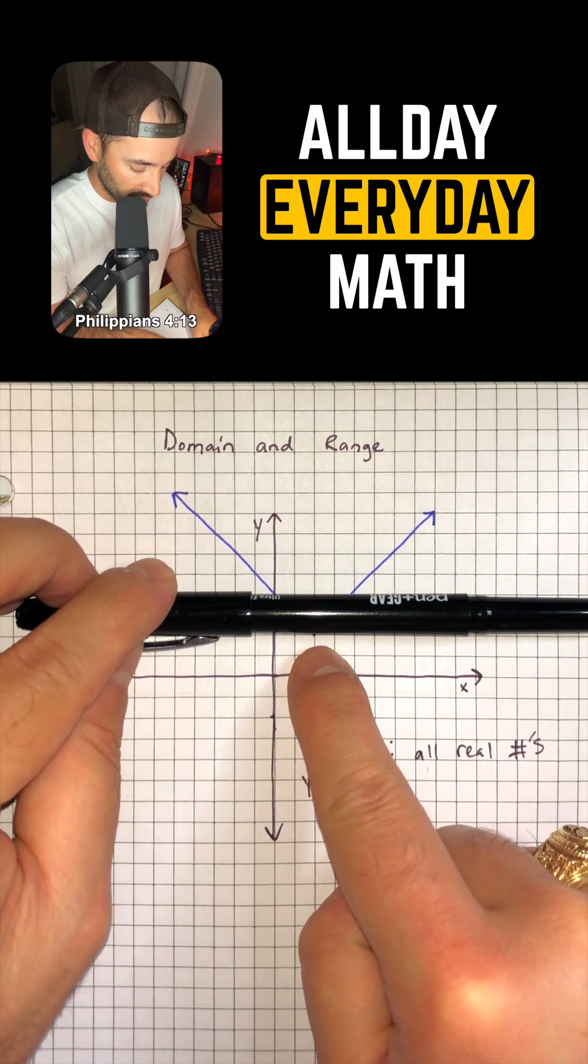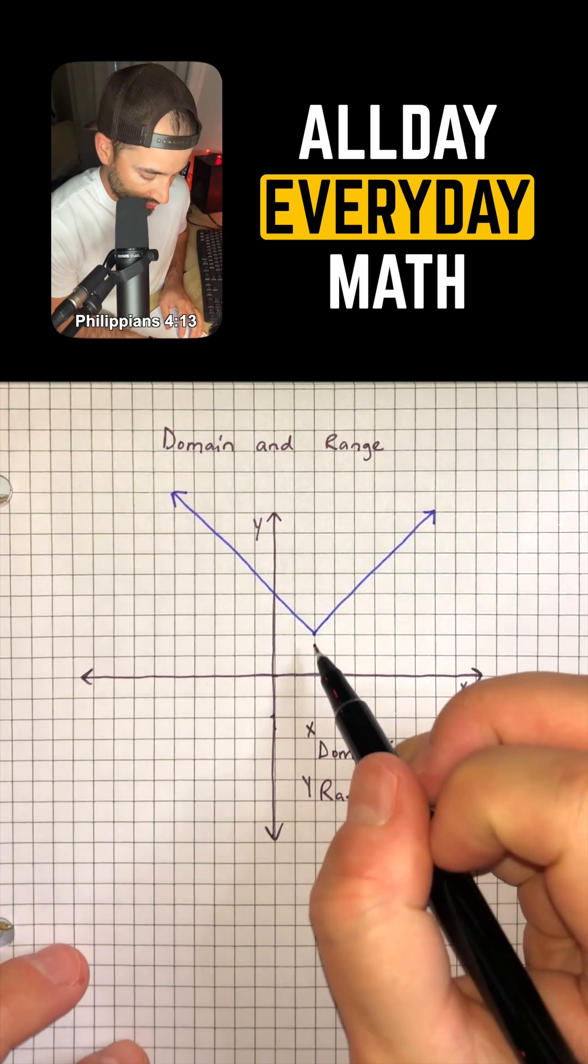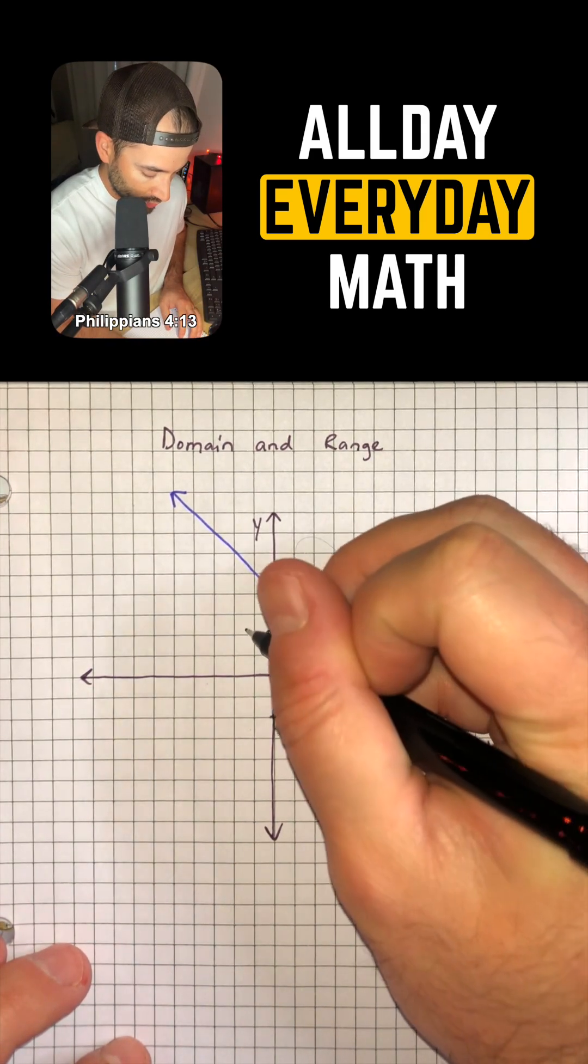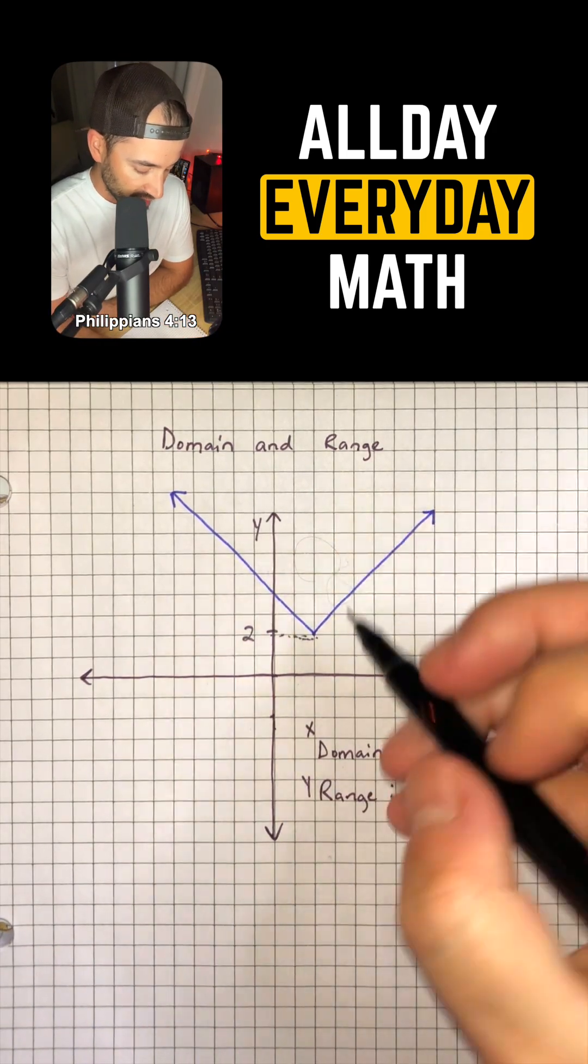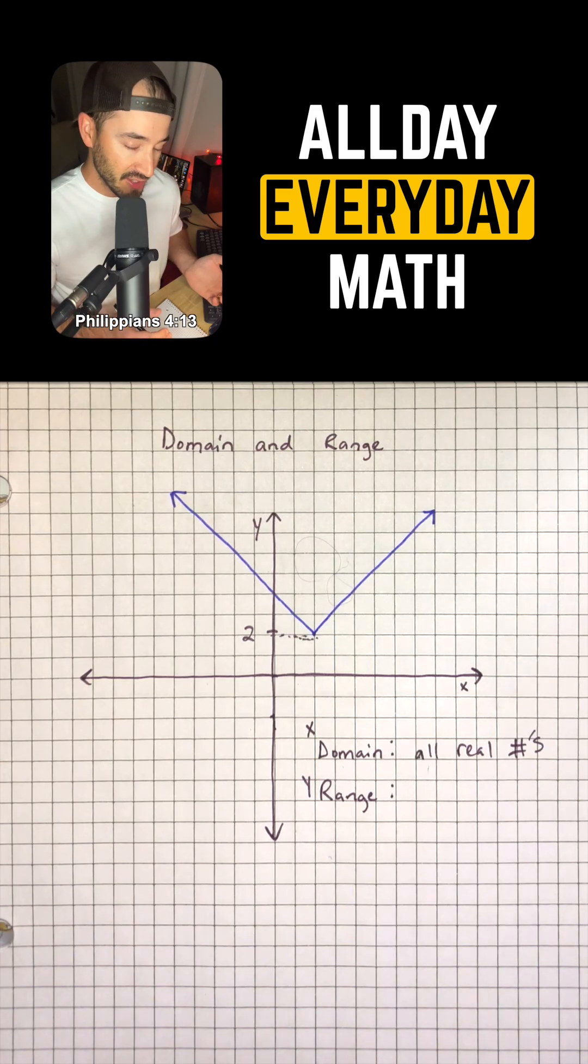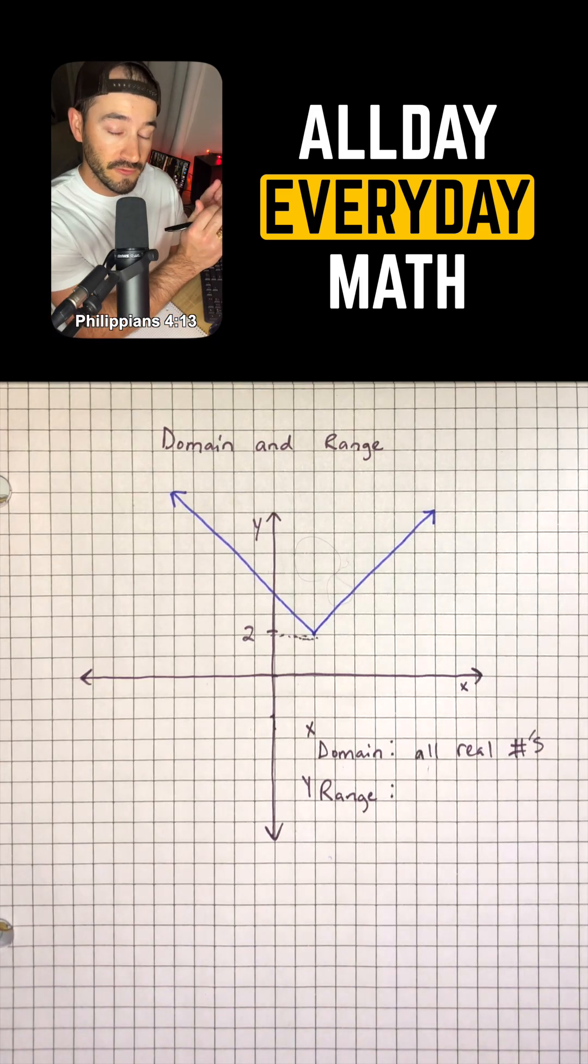So that's going to be the lowest point. That point is equal to 2 on the Y axis, and notice that it does touch 2. So that means that our range is basically everything from 2 and up to infinity.